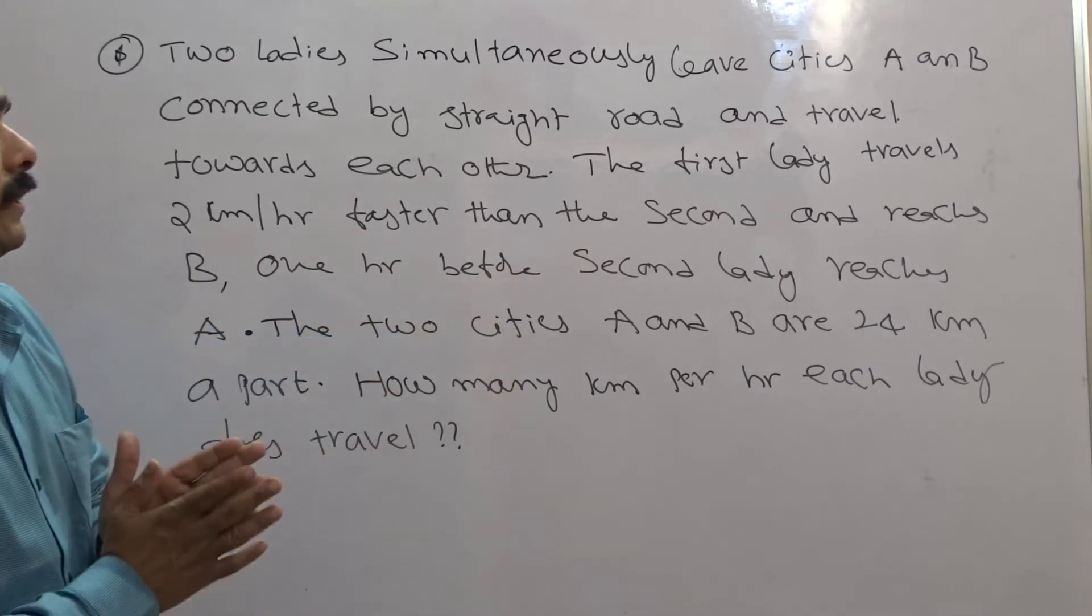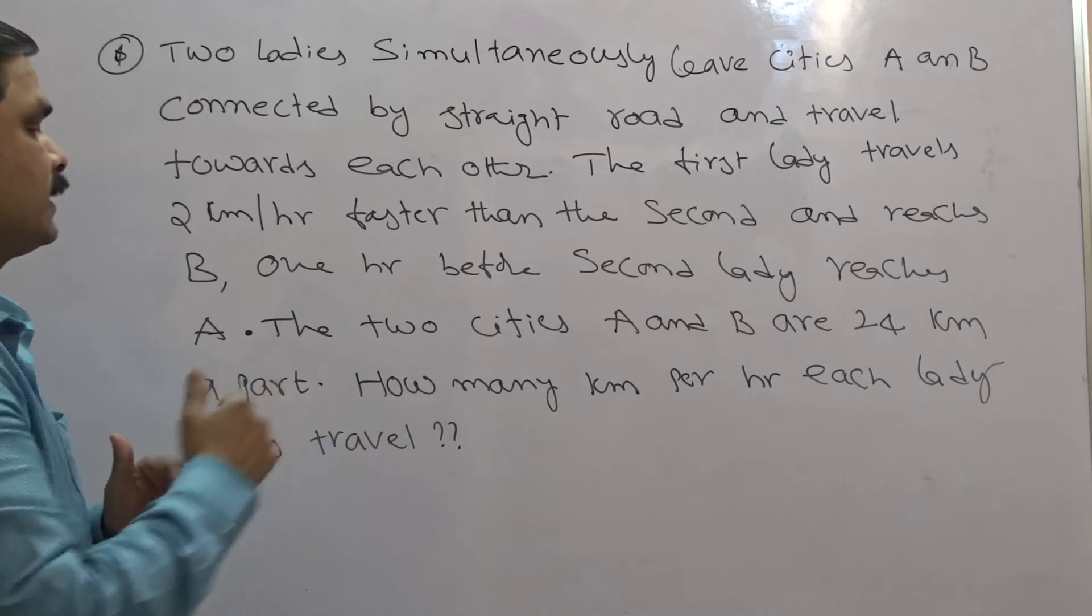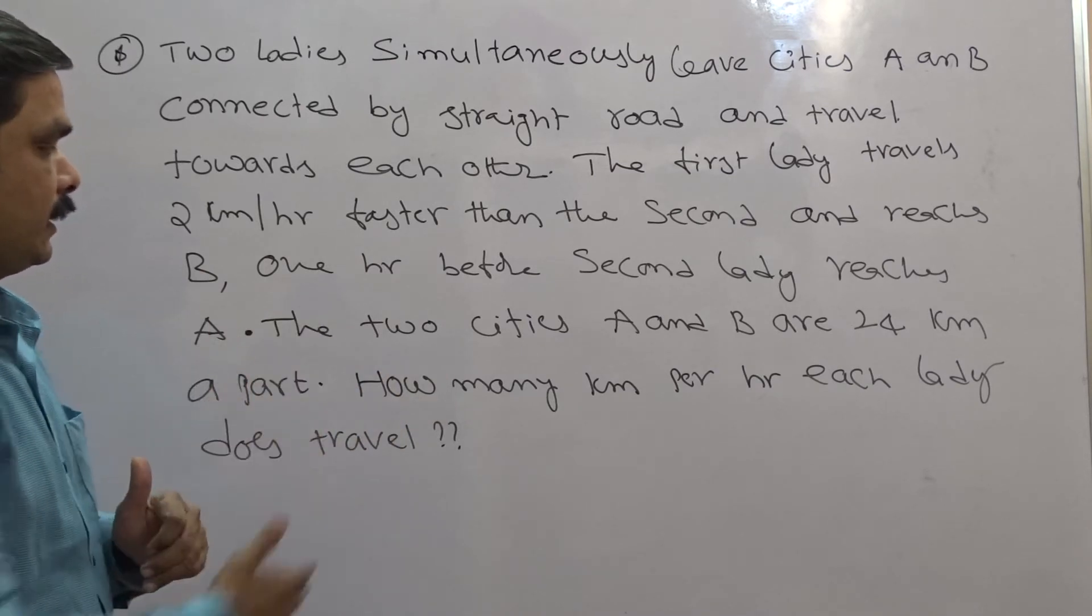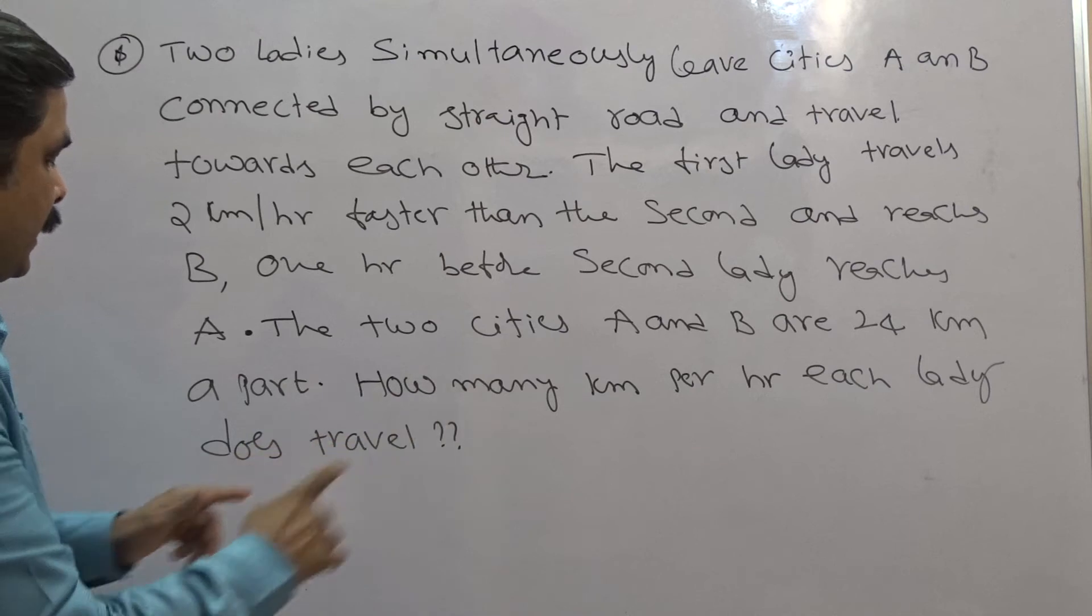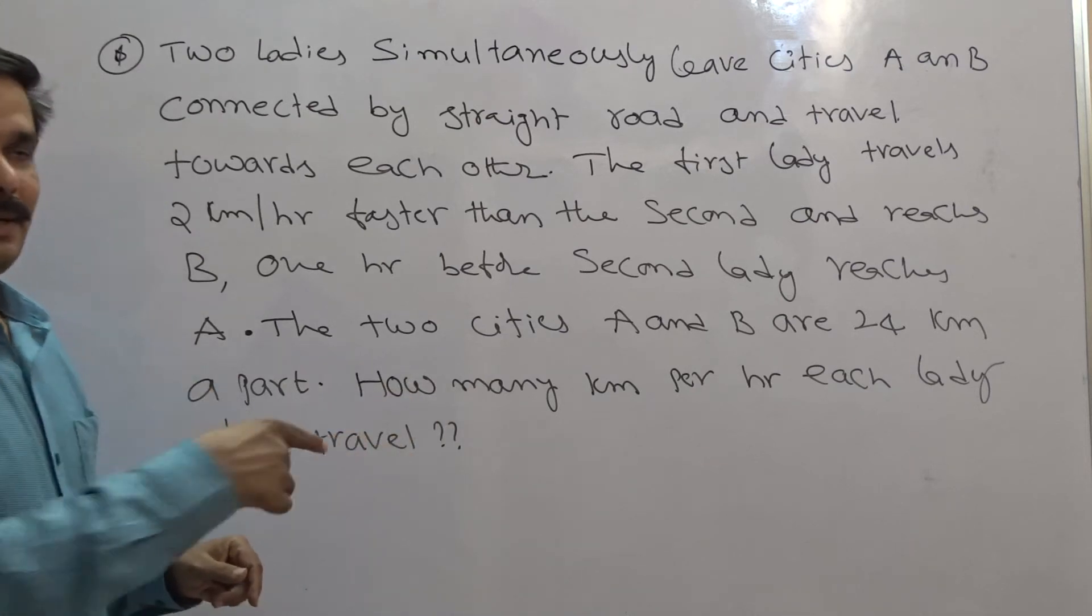The two cities A and B are 24 kilometers apart. The question is: how many kilometers per hour does each lady travel?